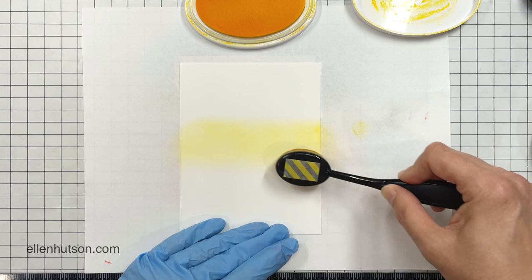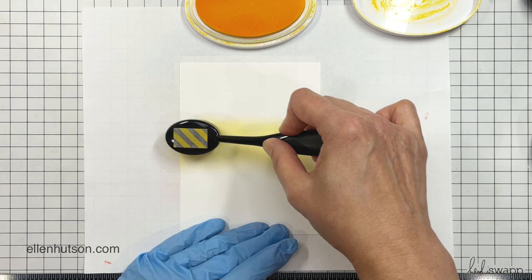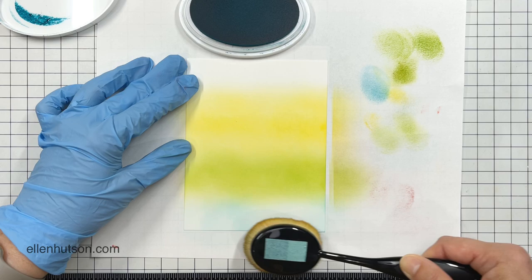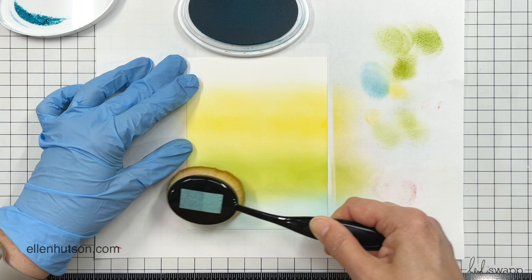I'll have the colors listed down below. These are water-based dye inks by Catherine Pooler and I'm using those blending brushes. I started with yellow first because I know that's the color that's easiest to cross-contaminate.